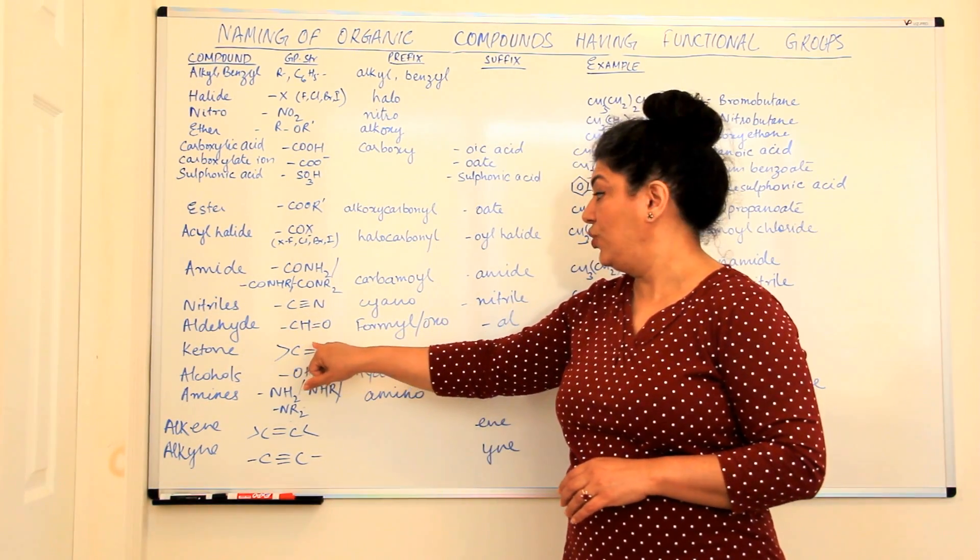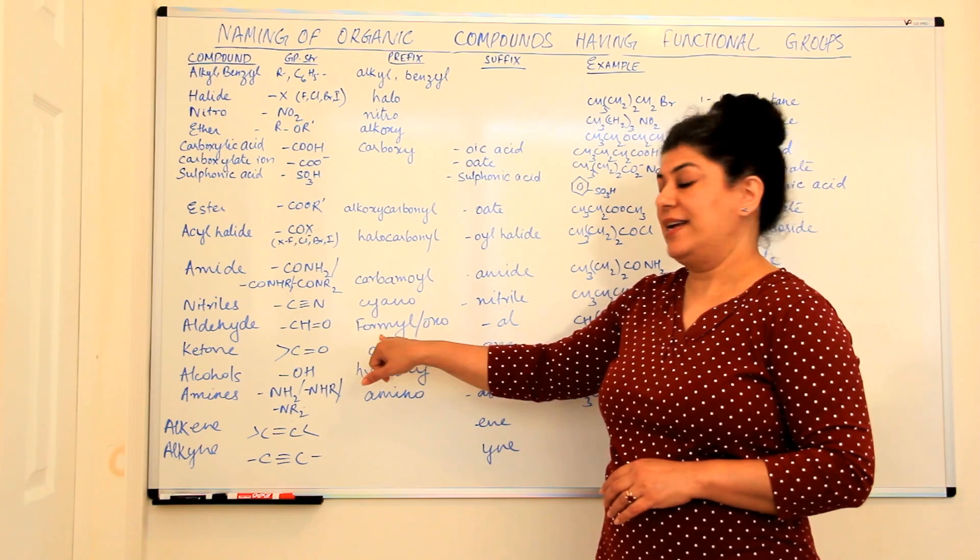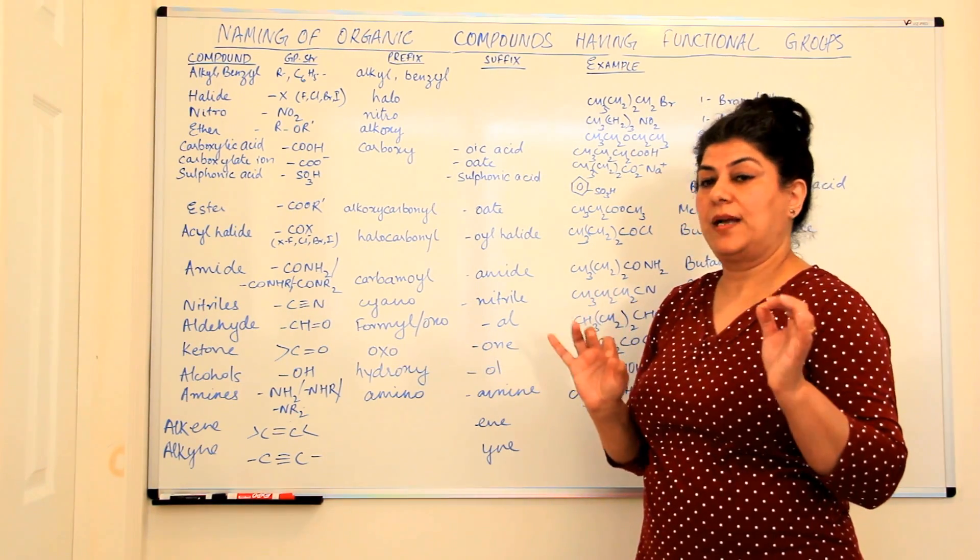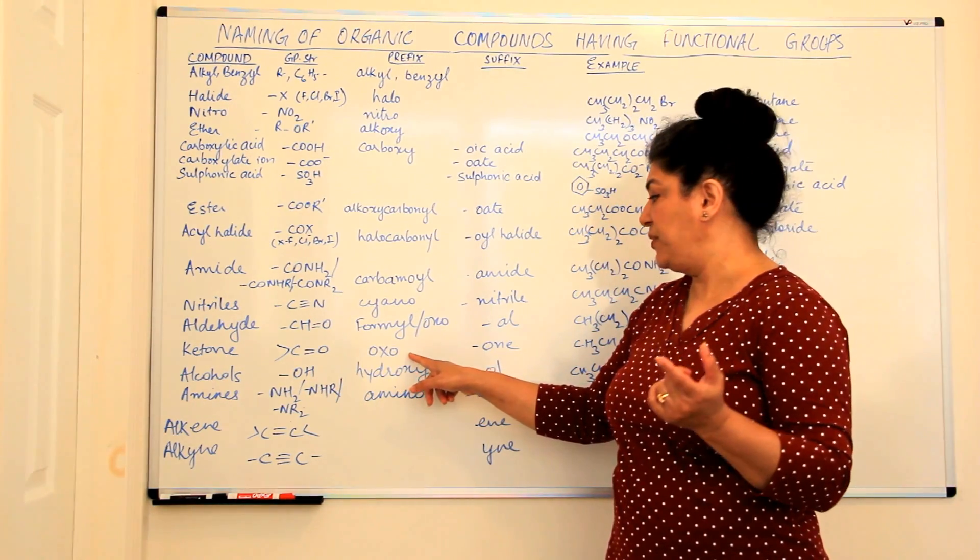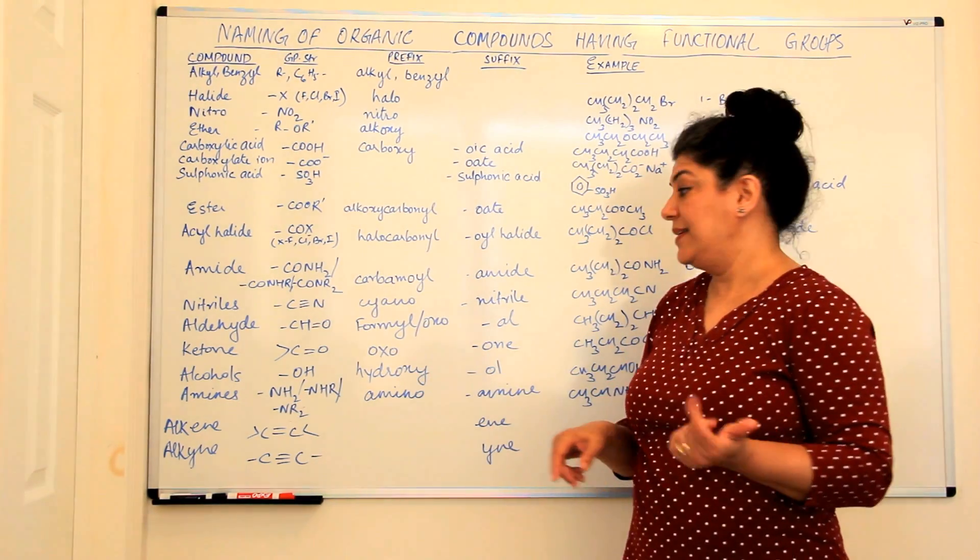Aldehydes are CHO, formyl as a prefix and al as a suffix. Ketones are CO, oxo as a prefix and one as a suffix.